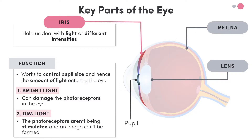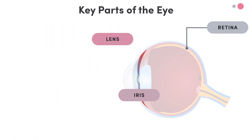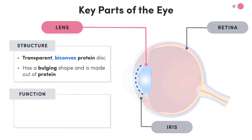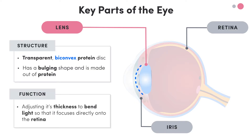Another key structure of the eye is the lens. It's a transparent, biconvex protein disc — that is, it's semi-clear, it has this bulging shape, and it's made out of protein. The lens's job is to fine-tune the bending of light, so that it focuses exactly onto the retina.